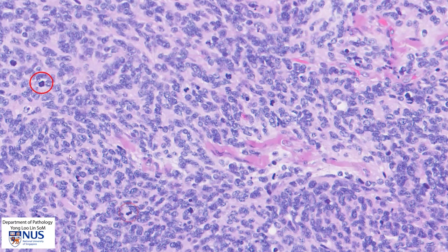Counting the mitotic figures: one, two, three, four, five, six, seven, possibly here as well — eight. So there are at least eight mitotic figures in this single high-power field. This is a very rapidly growing or aggressive tumor.